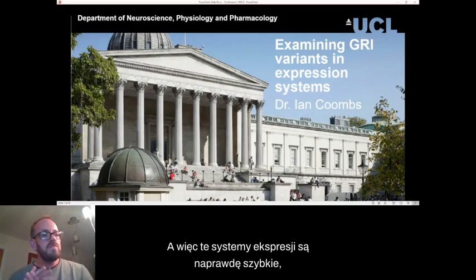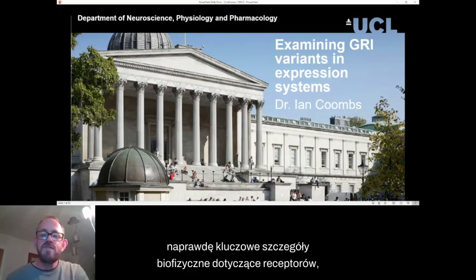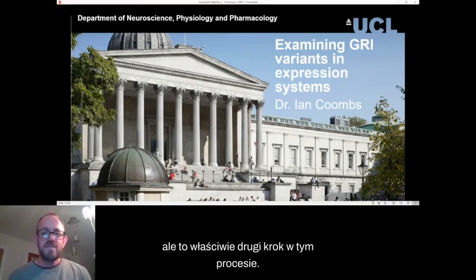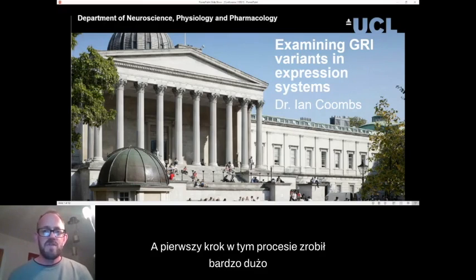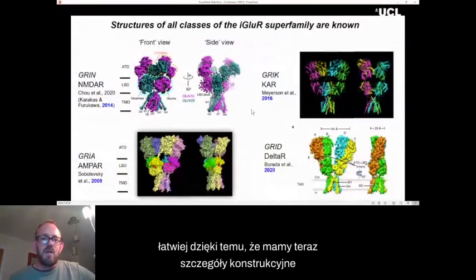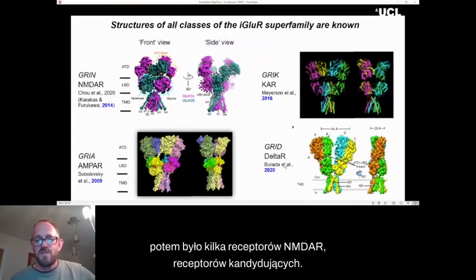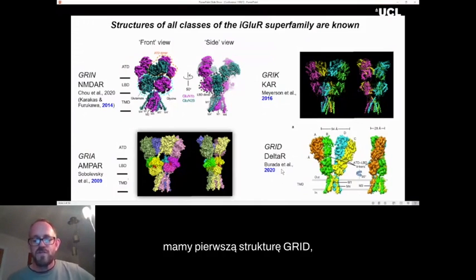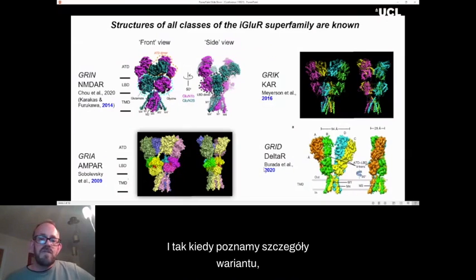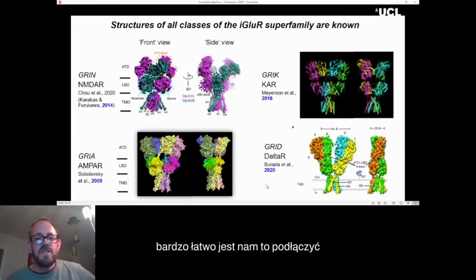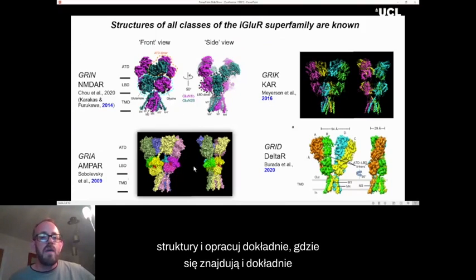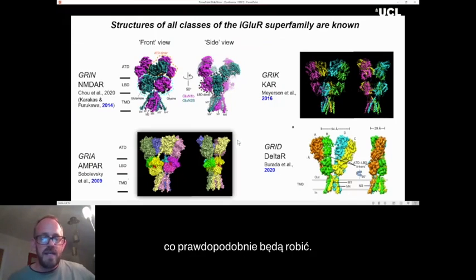So these expression systems, they're a really fast, efficient way of understanding really key biophysical details about the receptors. But it's actually the second step in the process. The first step in the process is made an awful lot easier by the fact that we now have structural details of all of the glutamate receptors. So starting off with AMPA receptors back in 2009, then there was some NMDA receptors, kainate receptors, and finally last year, we have the first structure of a GRIA receptor as well. When we find out the details of the variant, it's very easy for us to plug that into these structures and work out exactly where they are and exactly what they're likely to be doing.